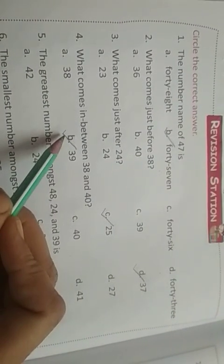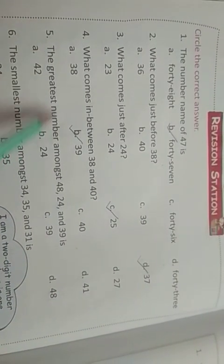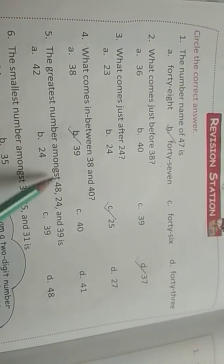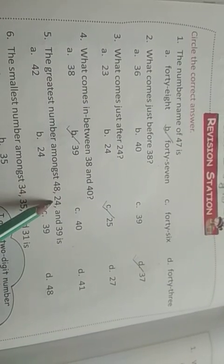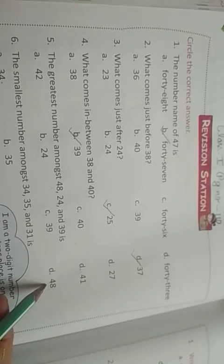Fifth, the greatest number among us, among us 48, 24, and 39 is... Greatest number कौन सा है इन तीनों में? 48, 24, 39. a) 42, b) 24, c) 39, d) 48. Greatest number कौन सा है? 48.